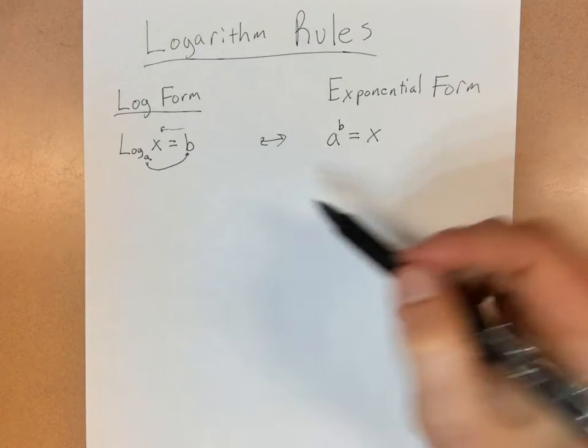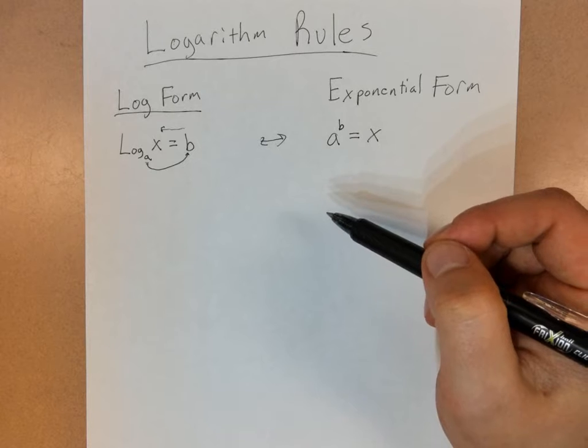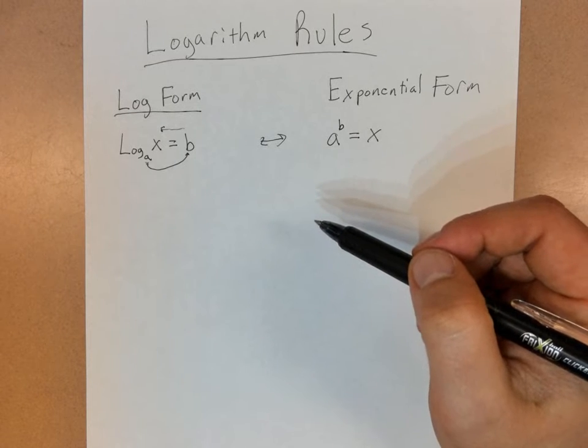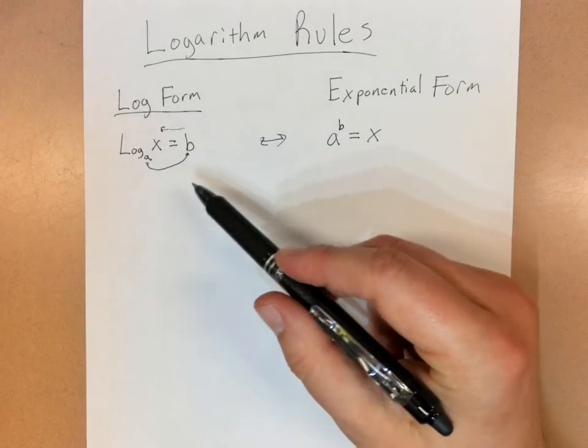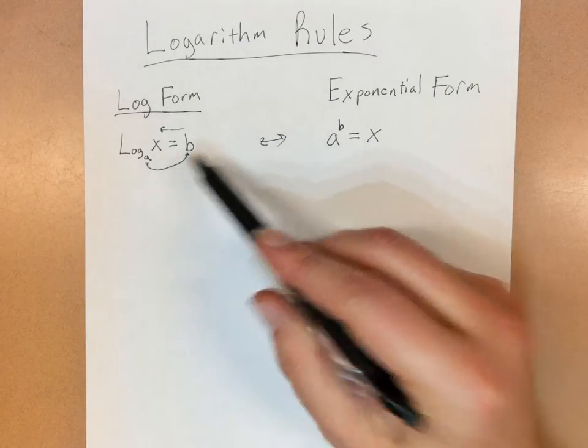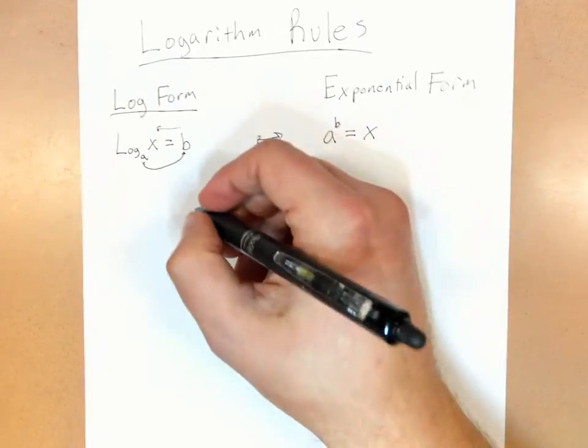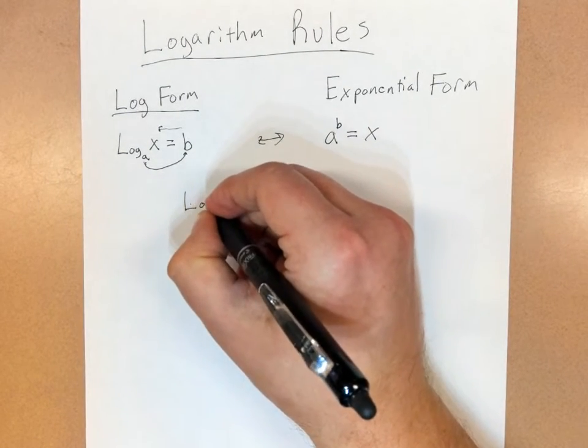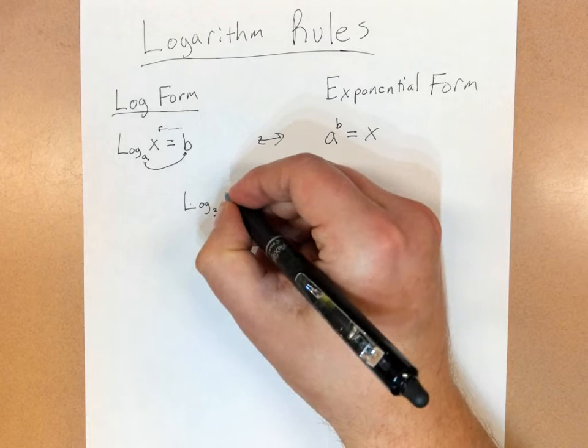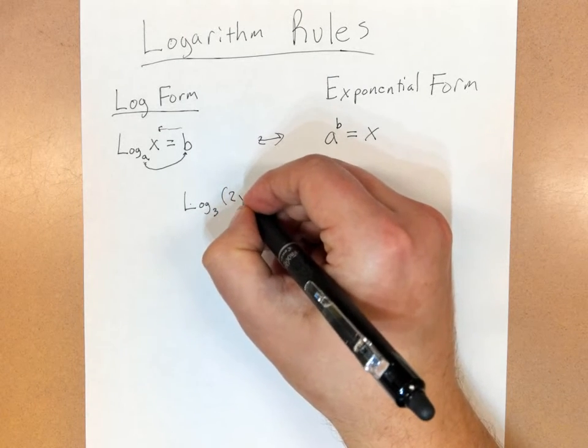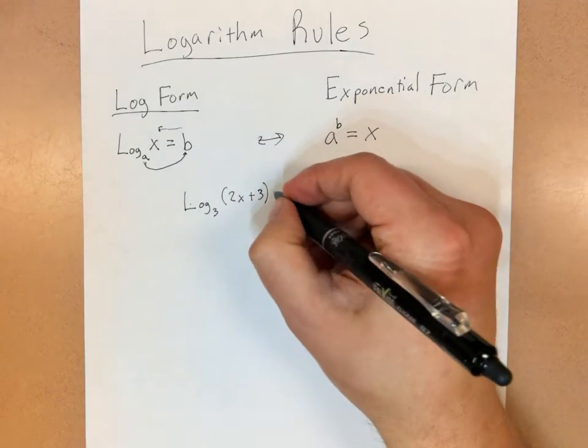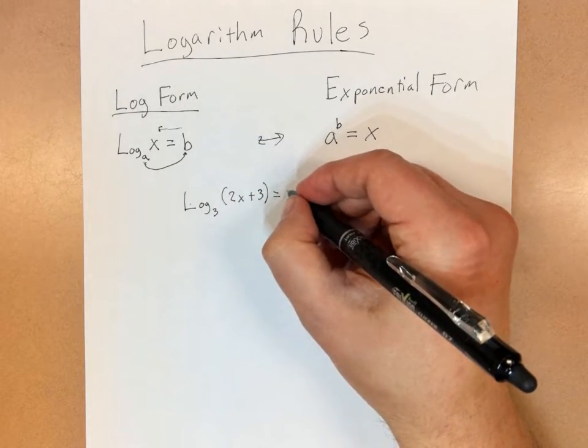And so these two are equivalent things. This can be very helpful when you're solving equations, which we'll do in another video. But just really focus on how do I convert from one thing to the other. So an example would be, let's say that I have log base 3 of 2x plus 3. Let's say that that equals 4.